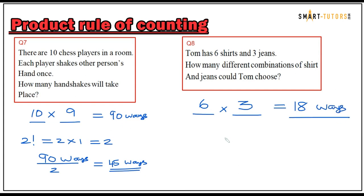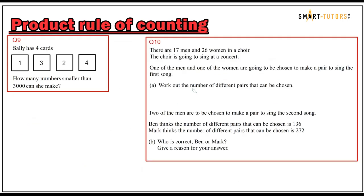Here you do not need to divide, because it doesn't matter whether he puts on the jeans first or the shirt first — at the end of the day he wears one shirt and one pair of jeans as a single outfit. Since these are different categories, there are no duplicates. 18 ways is the answer for question number eight.